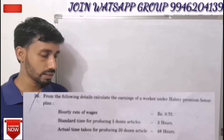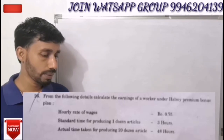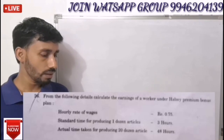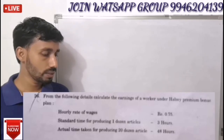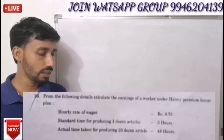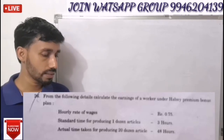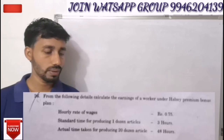From the following details, calculate the earnings of a worker under Halsey Premium Bonus Plans. Hourly Rate of Wages: 0.75. Standard Time for producing 1 dozen articles: 3 hours. Actual Time taken for producing 20 dozen articles: 48 hours.